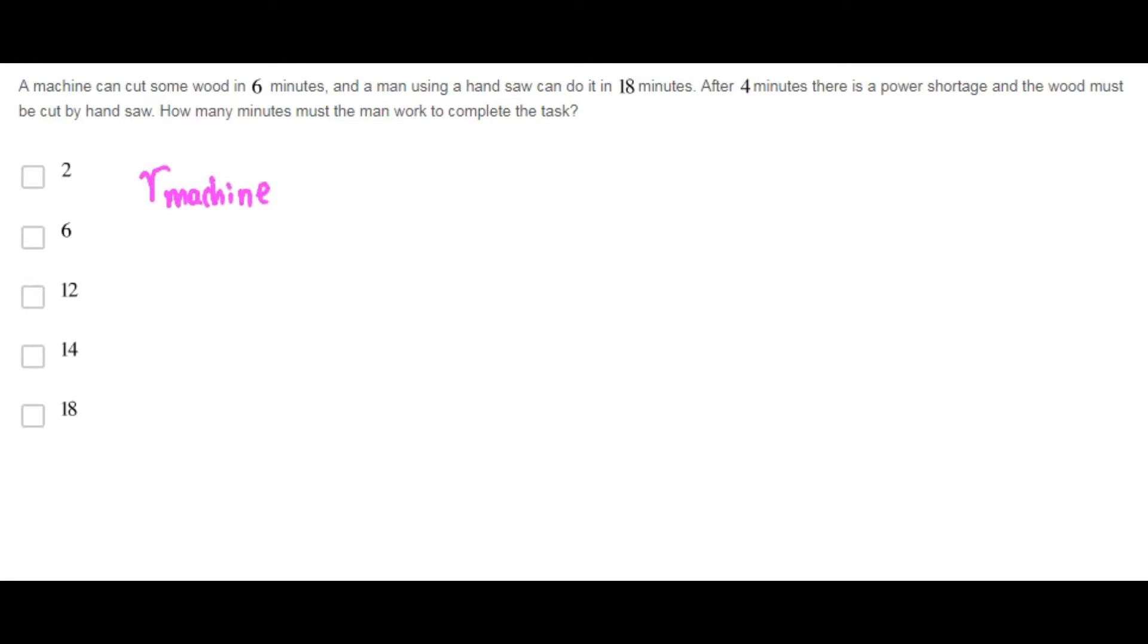First of all, the rate of the machine is one job every 6 minutes and the rate of the man is one job every 18 minutes.